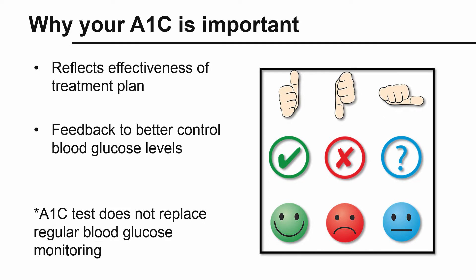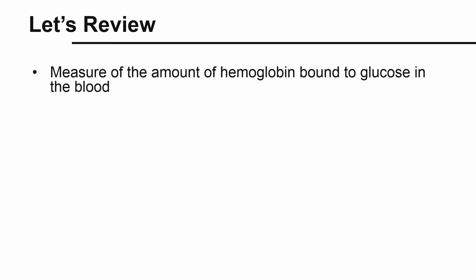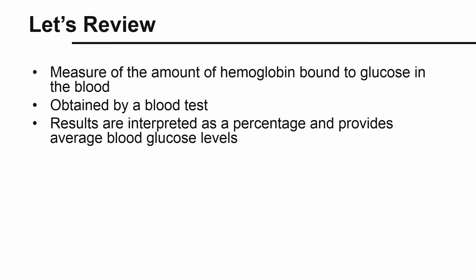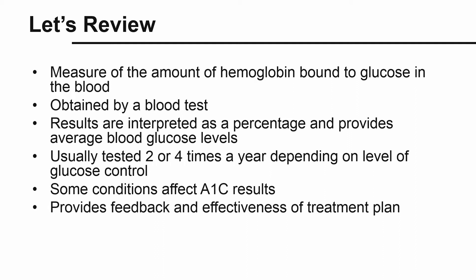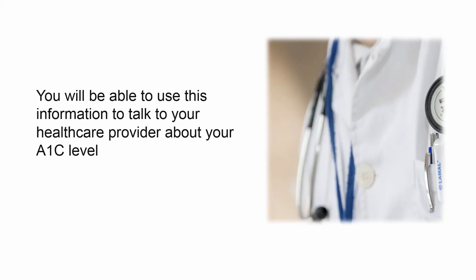It is important to keep in mind that the A1c test does not replace regular glucose monitoring. Overall, A1c is an important measure for diabetic individuals to understand. A1c is a measure of the amount of hemoglobin and glucose that are bound together, obtained by a blood test. Results are interpreted as a percentage, in which a lower A1c percentage is usually better. The test is usually conducted two or four times a year. Individuals with heavy bleeding, anemia, or blood transfusions will have unreliable results. The importance of the A1c measure is that it provides feedback on how well you are managing your diabetes and determines if the current treatment plan is effective. Now that you have an understanding of A1c, you will be able to use this information to discuss your A1c level with your healthcare provider.